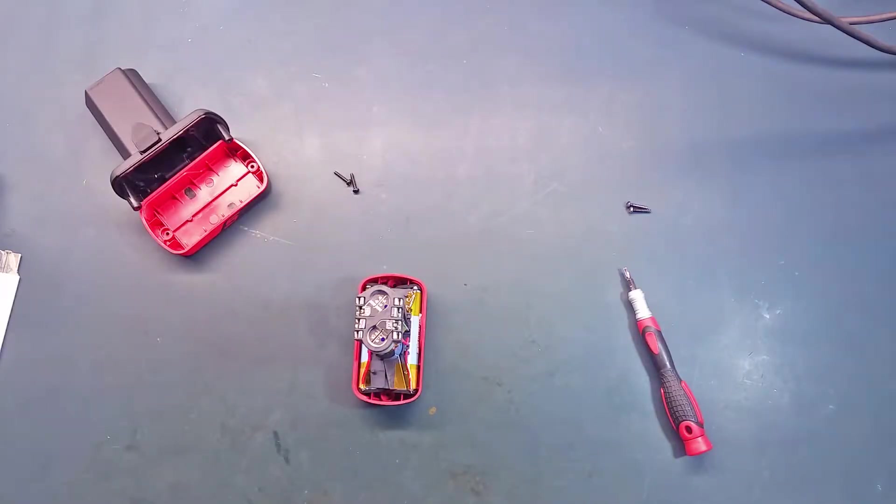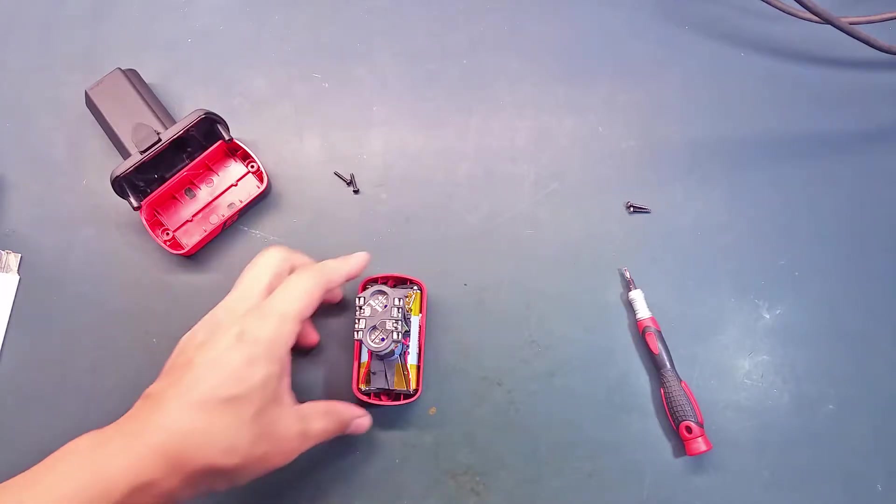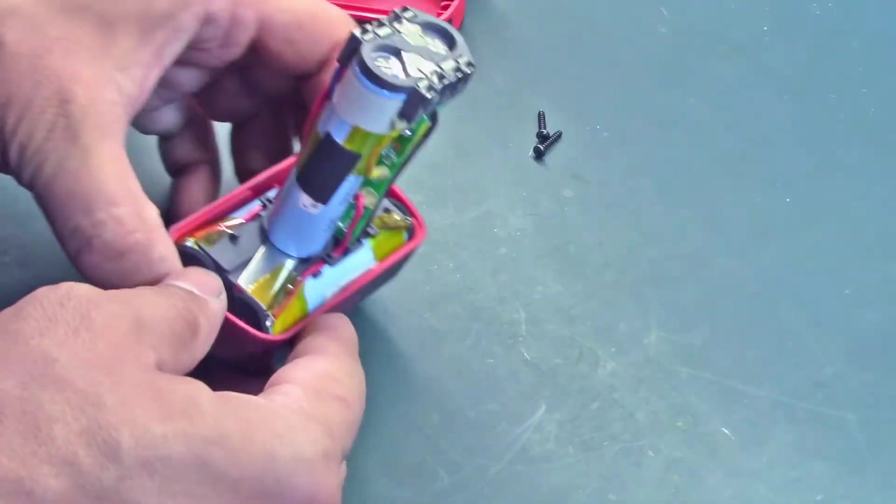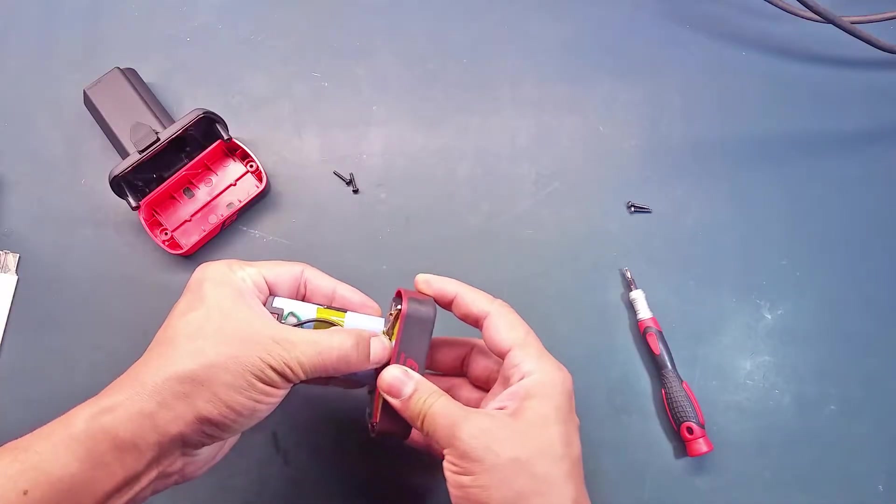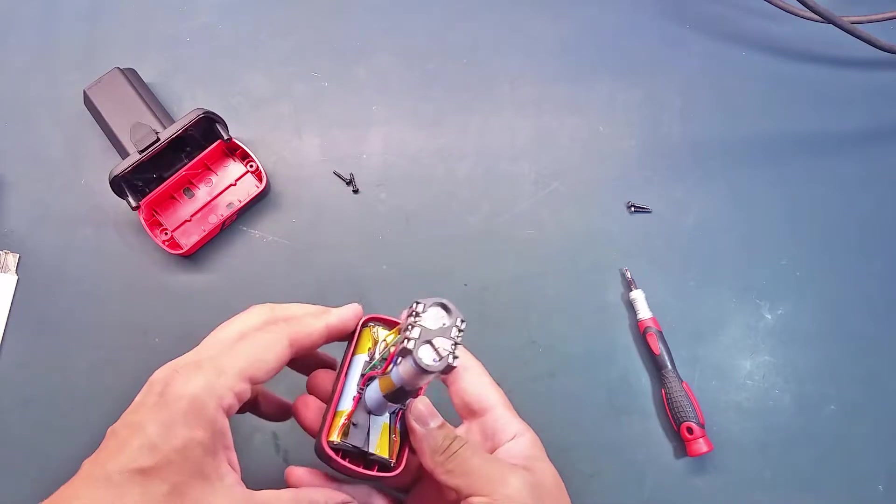Now let's go ahead and remove the battery from the bottom part of the enclosure. Hopefully I won't break the wrapping on this because sometimes they use very strong glue so the battery itself is not moving around inside.